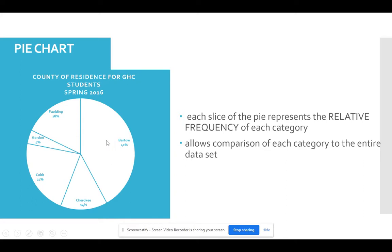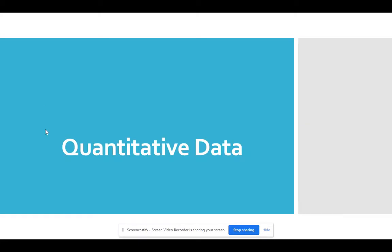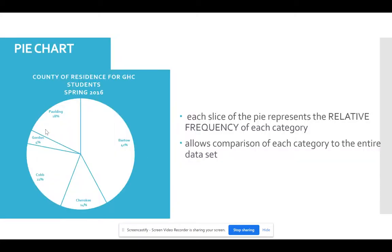Pie charts you'll see used a lot when you're maybe displaying budgets and thinking about how much you're going to spend in the different categories for materials, for labor, for advertising, and so forth. So it allows you to see how each category compares to the other, or how the whole 100% budget, if you will, is going to break down.